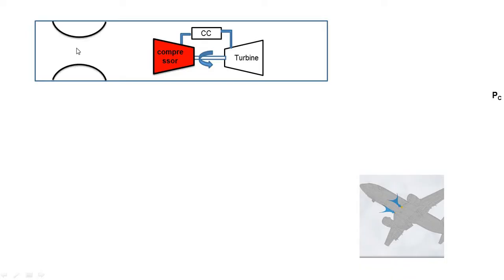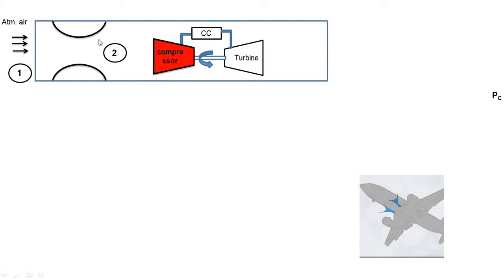The first component in this cell is the diffuser. Atmospheric air is supplied into the diffuser at point number one. The aeroplane flies at high altitude where pressure is lower than atmospheric pressure — lower than 1.01325 bar. This air is supplied into the diffuser where isentropic compression takes place, process one to two, meaning the pressure of the atmospheric air is increased from P1 to P2.